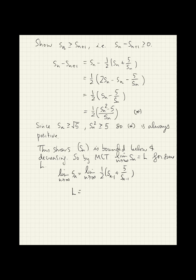We know the left hand side is L. The right hand side by the algebraic limit theorem is 1 half L plus 5 over L. We know L is not 0.